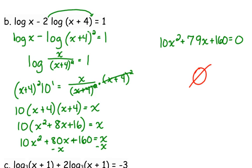So unfortunately there is no solution to this equation. There is no x for which the log of x minus 2 times the log of x plus 4 equals 1. It just doesn't exist.